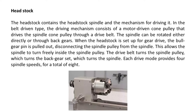Headstock. The headstock contains the headstock spindle and the mechanism for driving it. In the belt-driven type, the driving mechanism consists of a motor-driven cone pulley that drives the spindle cone pulley through a drive belt. The spindle can be rotated either directly or through back gears.